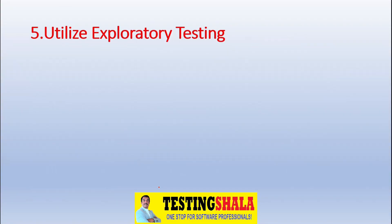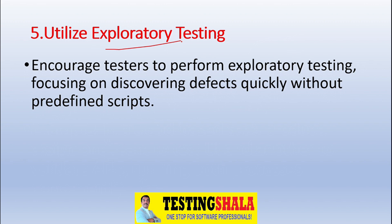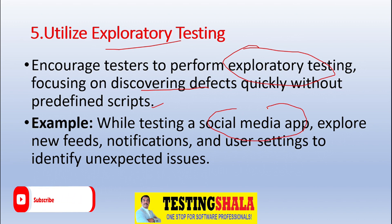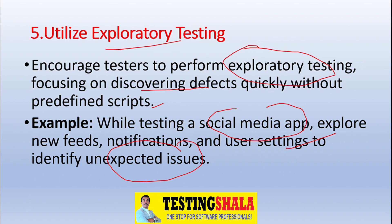The fifth option is utilizing exploratory testing, which is very crucial when we don't have enough time. We encourage testers to perform exploratory testing, focusing on discovering defects quickly without executing predefined test steps. For example, while testing a social media app, you explore new feeds, notifications, and user settings to identify unexpected issues, allowing you to find defects more quickly.